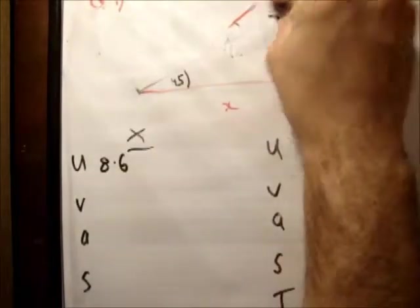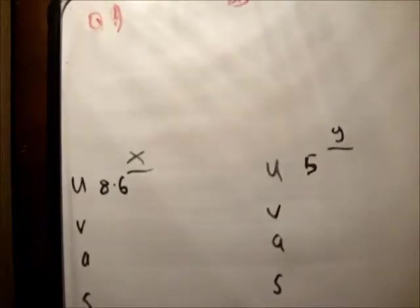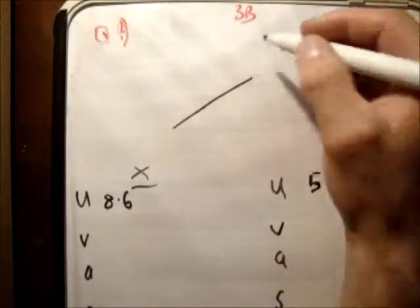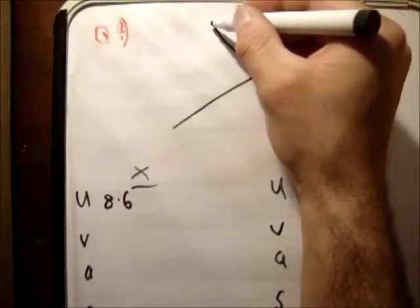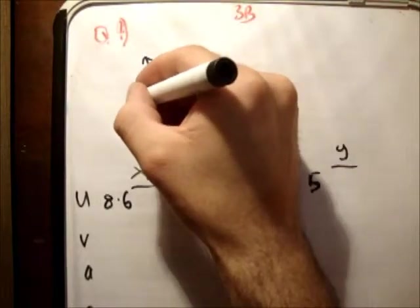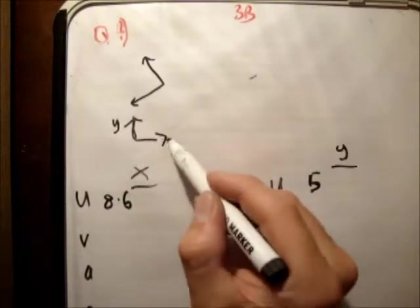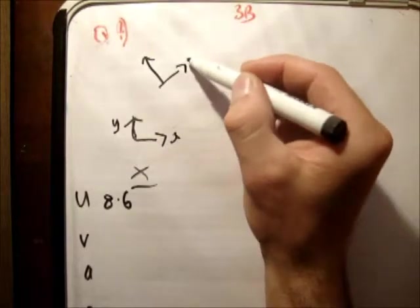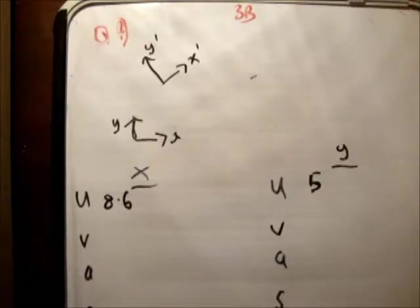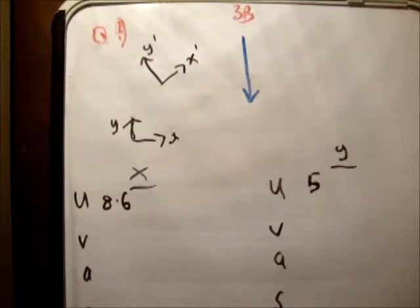The next thing we need to do is our gravity vector. So, if we draw our X' Y' plane like this. Actually, that's a bit big. We don't need it to be that big. And we draw our X' Y' plane like this. So this is Y. This is X. This is... That's not correct. Just there for reference. All right. What way does gravity go? Gravity goes straight down in the negative Y direction. So we need to resolve this in the X' Y' plane.